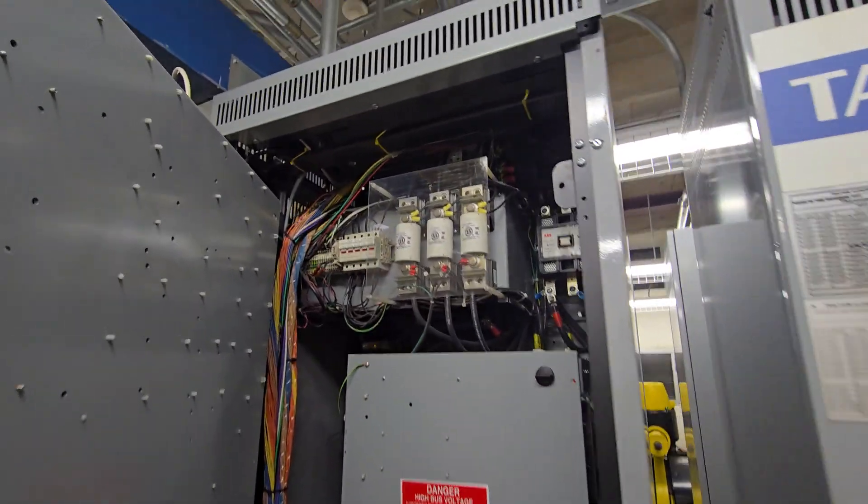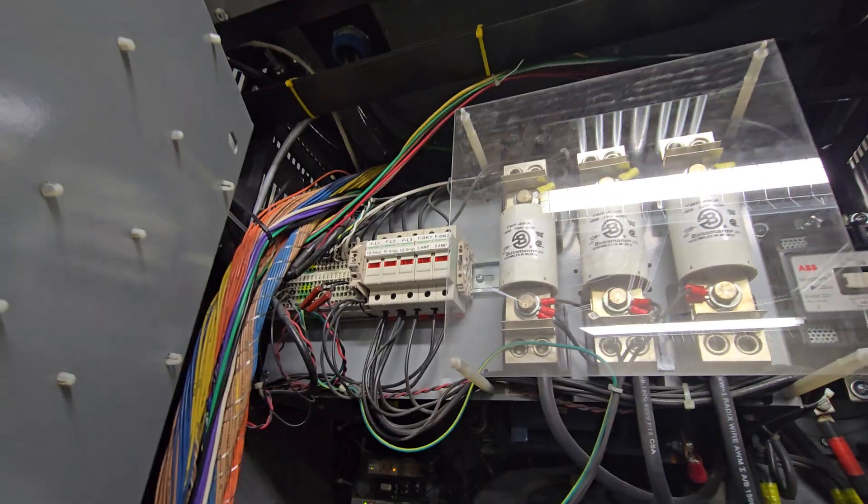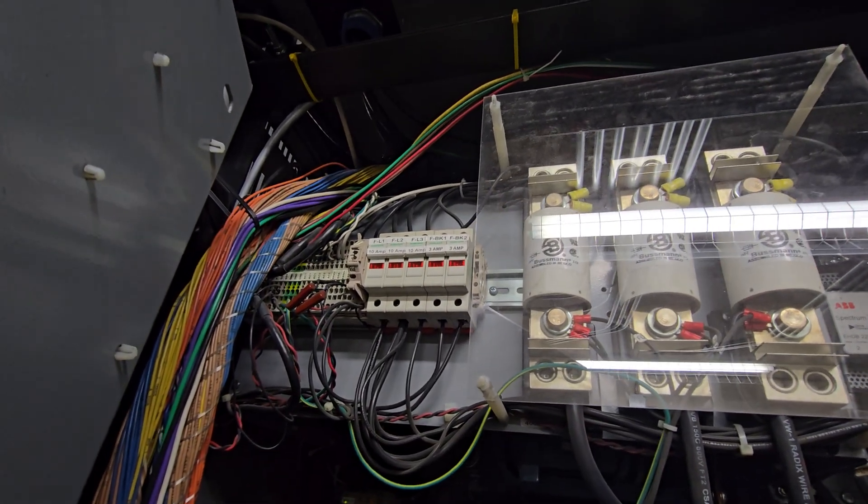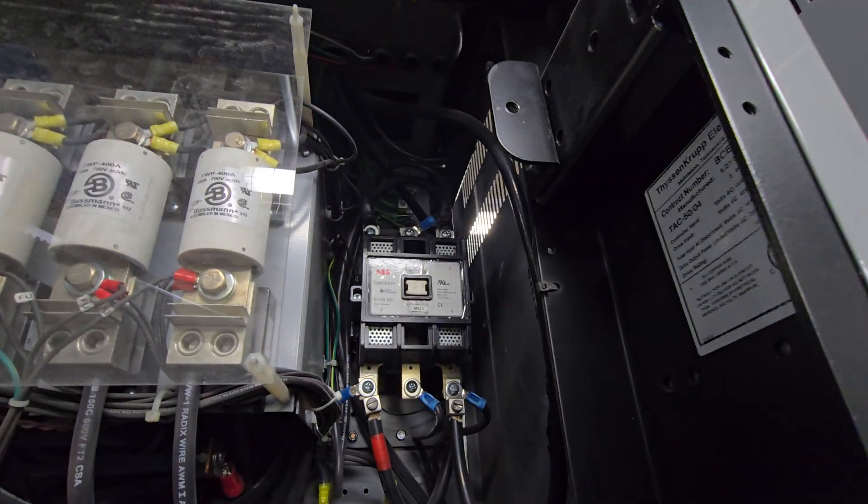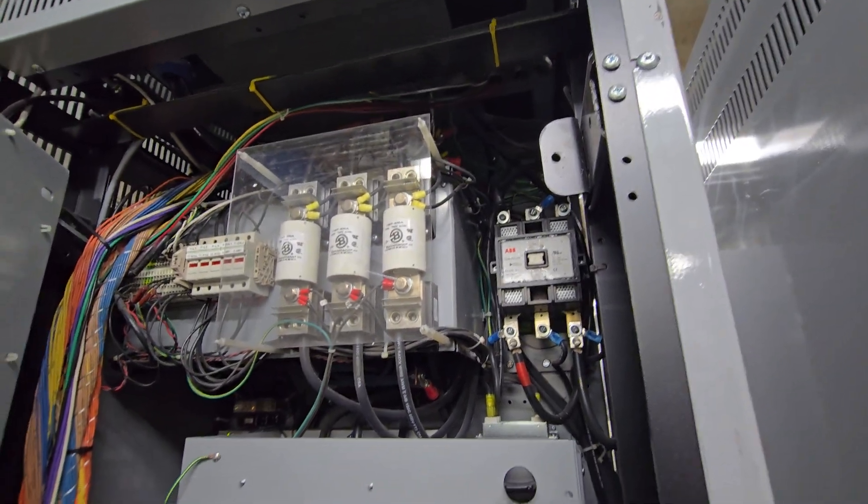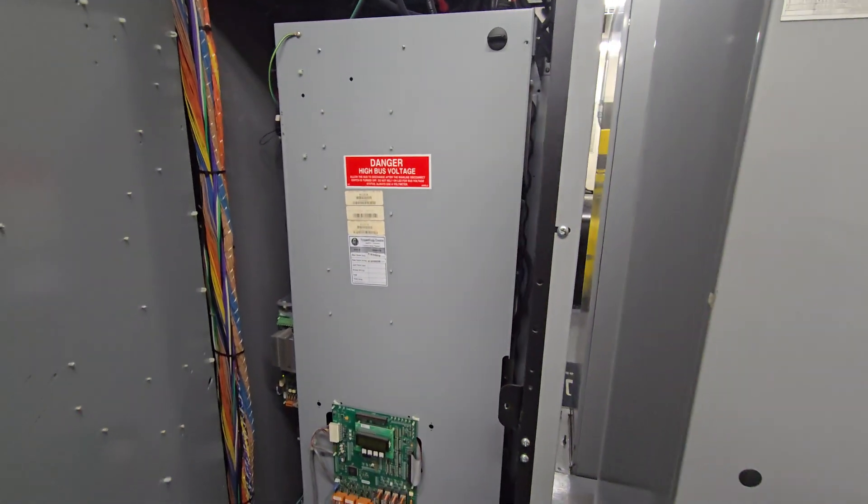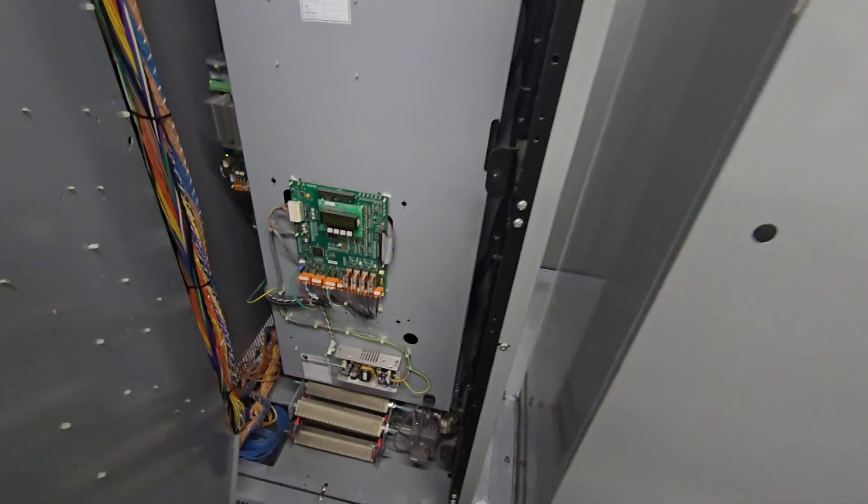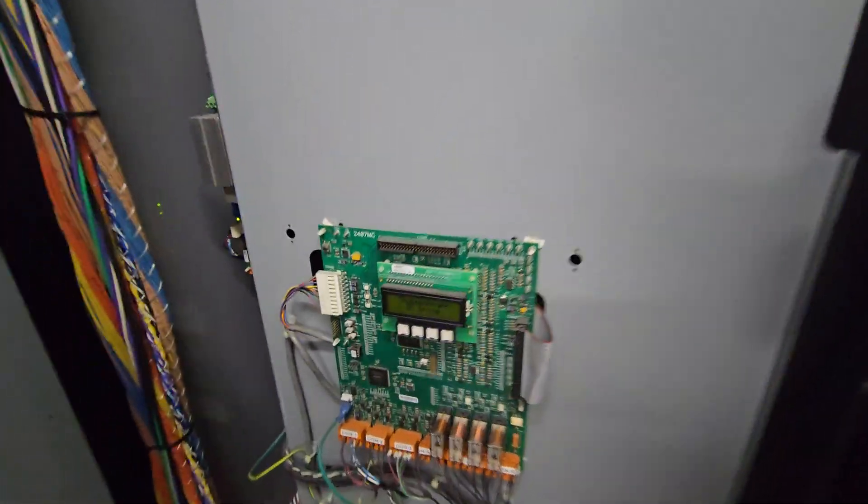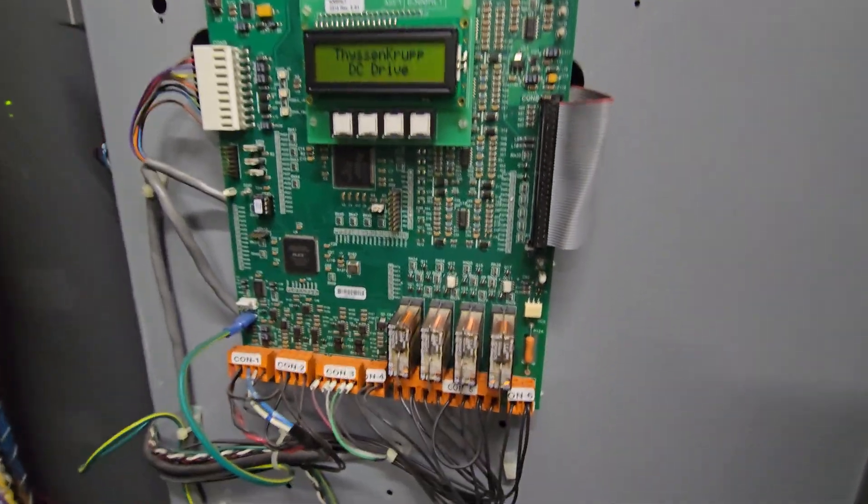All right, now that we have that cover off, you can see the breakers. I believe the breakers here are the fuses. And there is your contactor. And down here is your big boy DC drive. So this is what actually controls the speed of the motors down there. It's a DC drive.